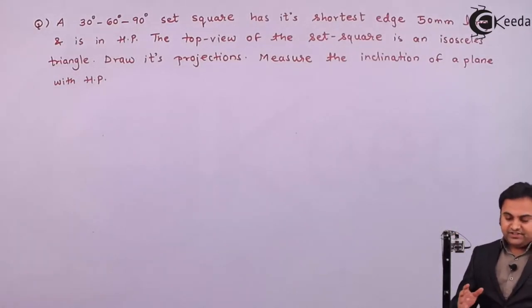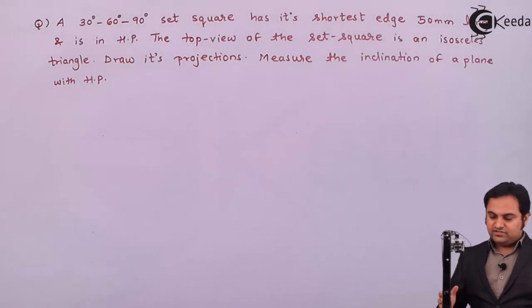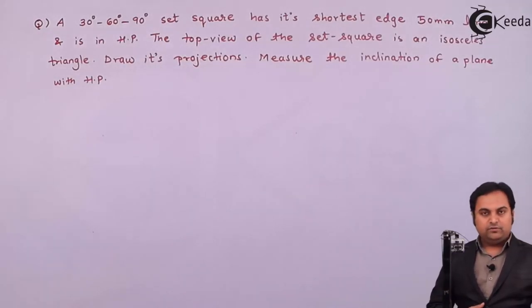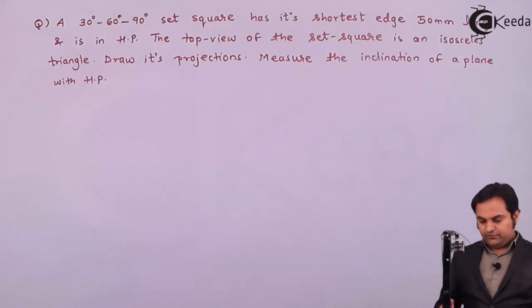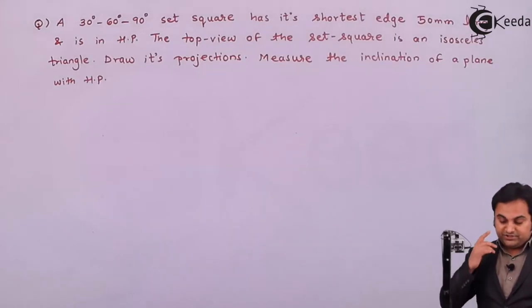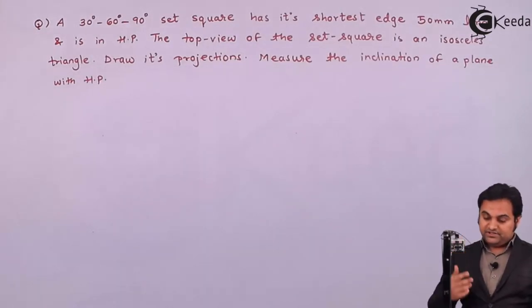A 30-60-90 degree set square has its shortest edge 50mm long and is in HP. The top view of the set square is an isosceles triangle. Draw its projections. Measure the inclination of a plane with HP.